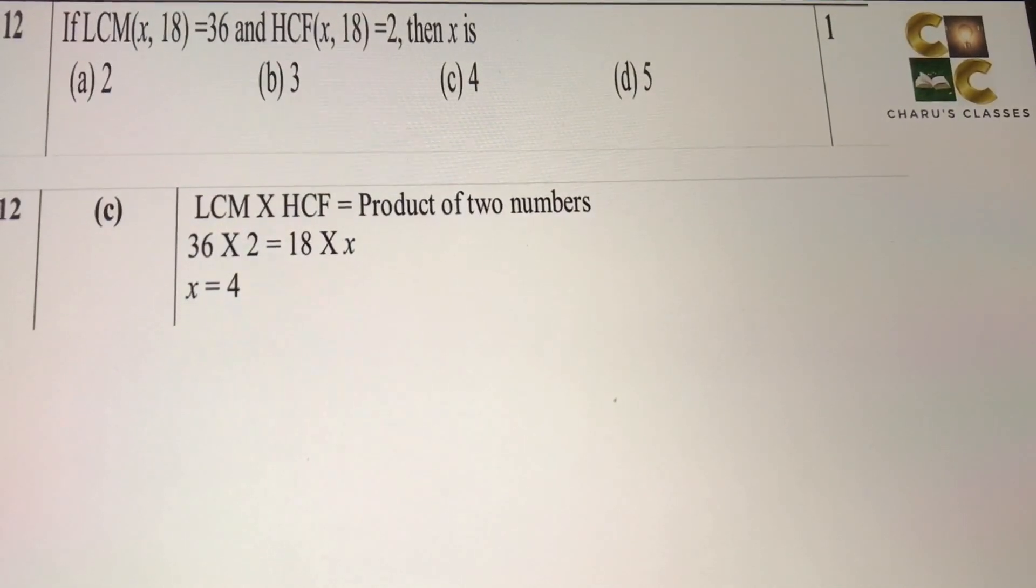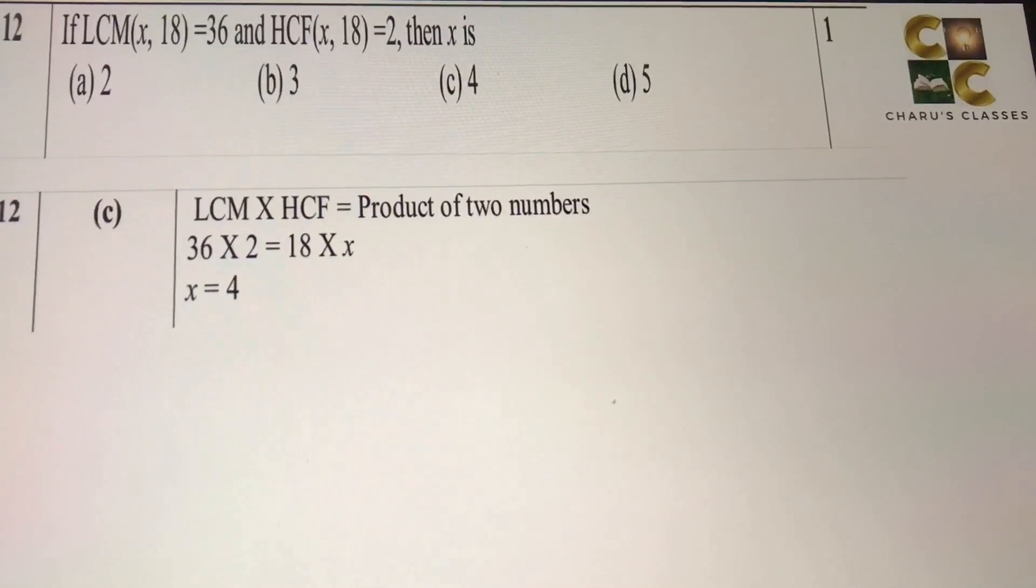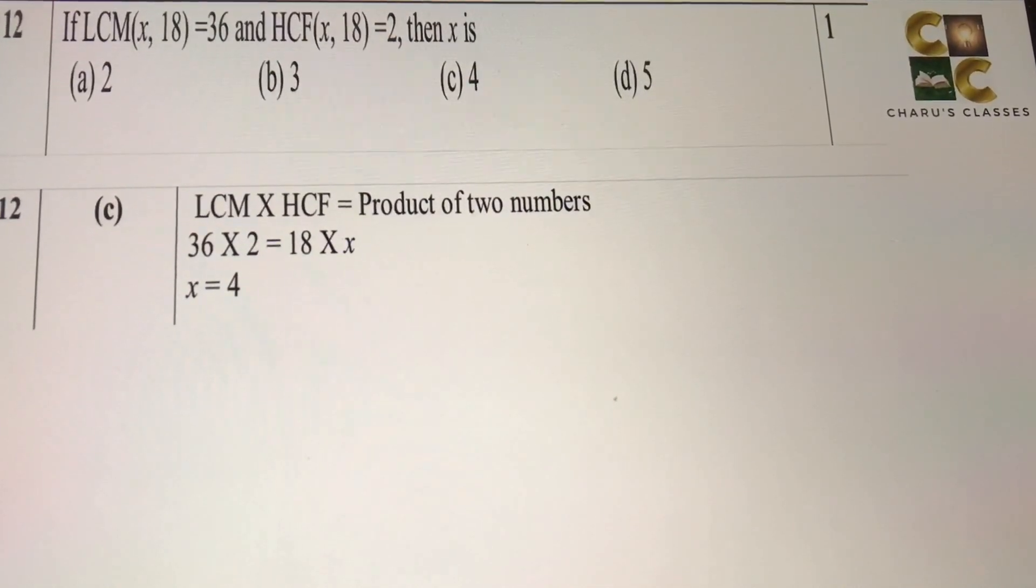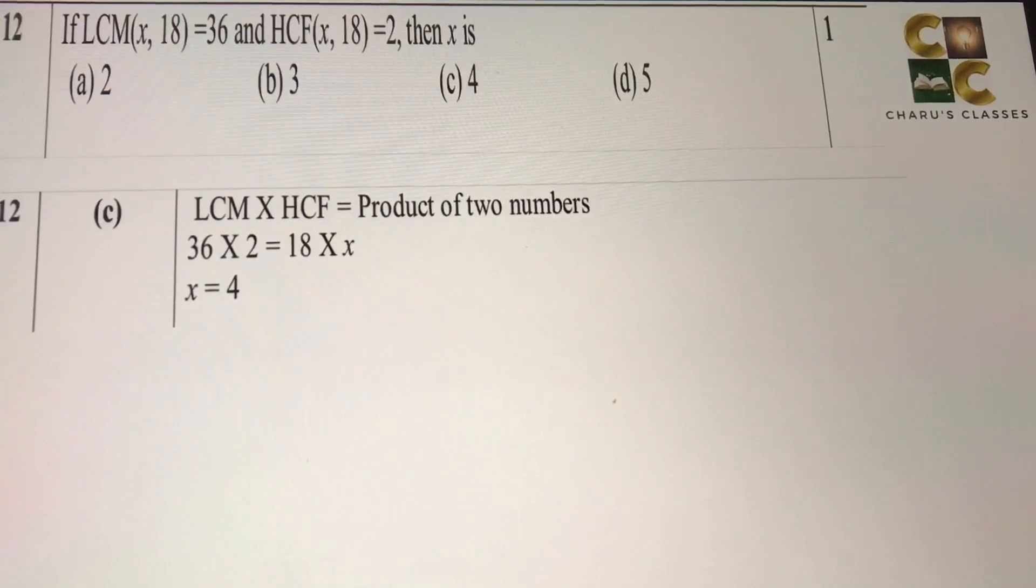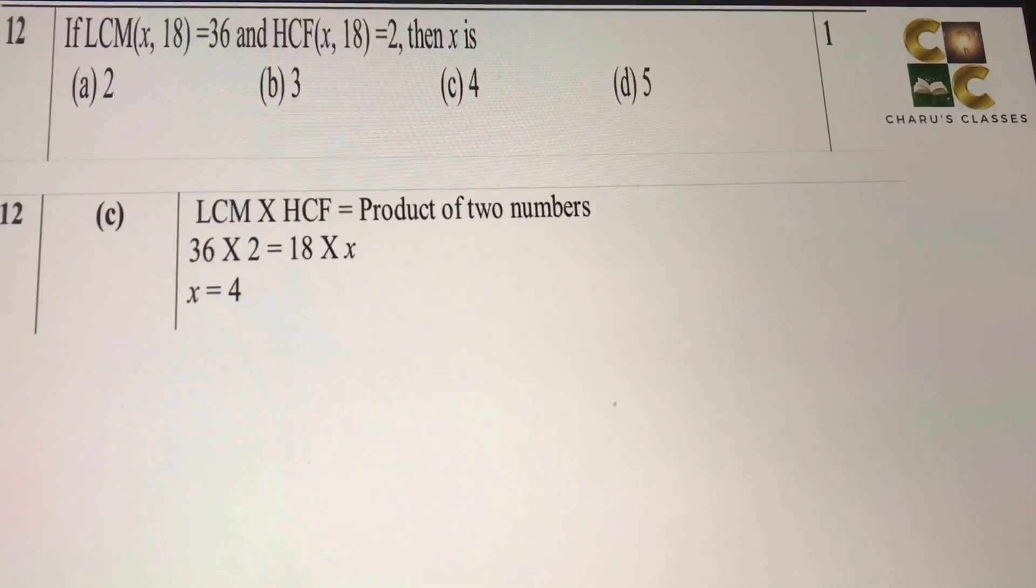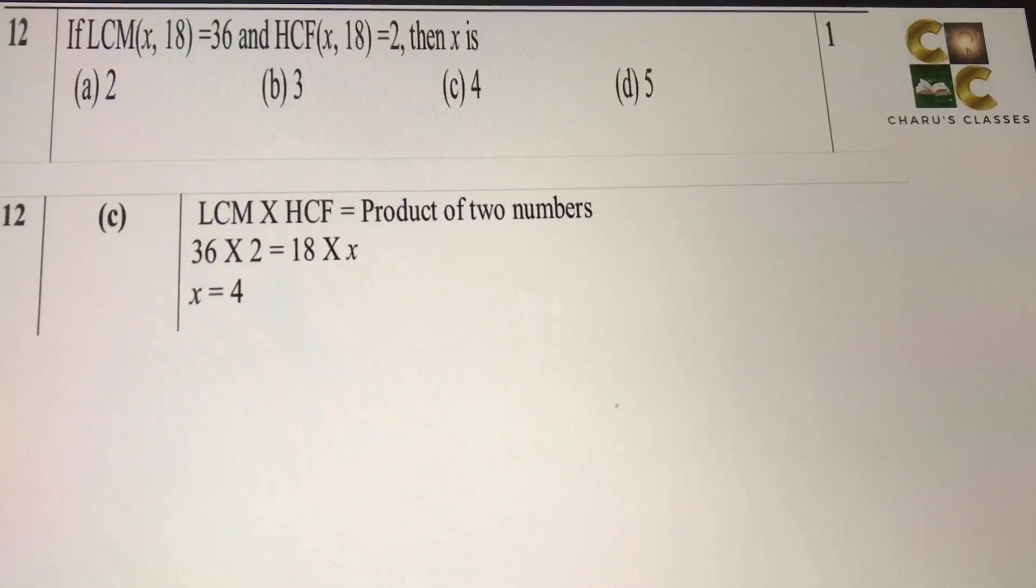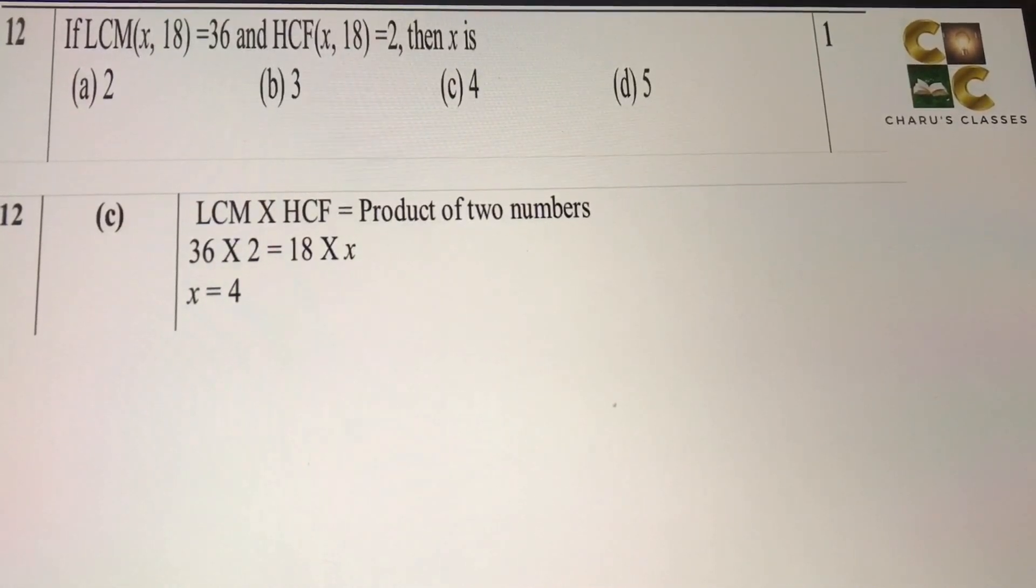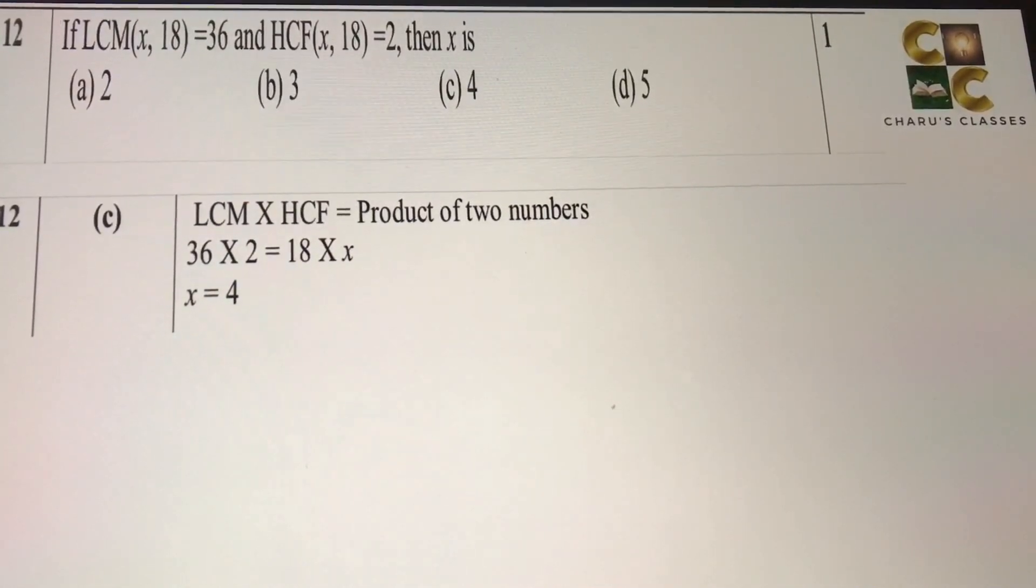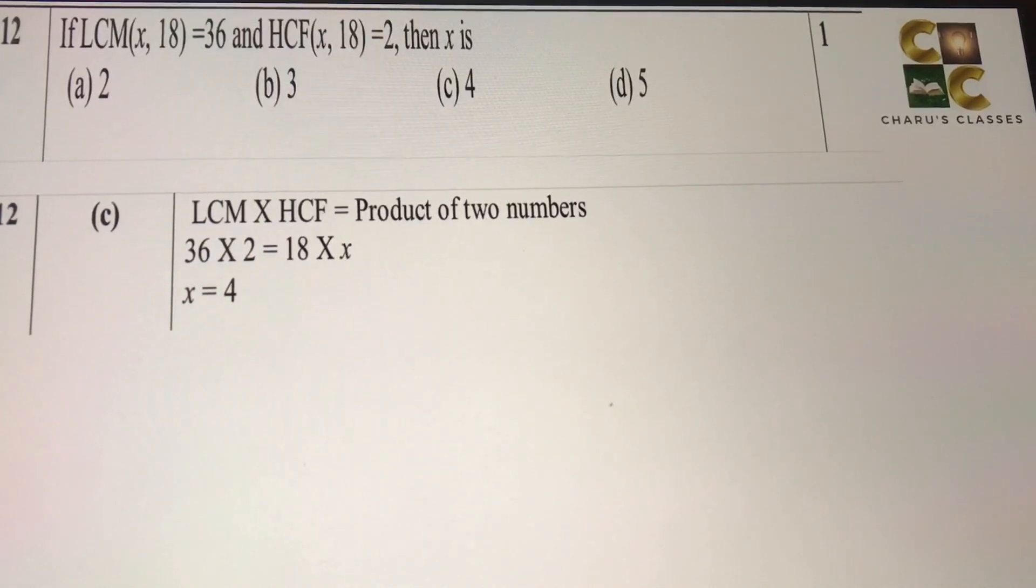If LCM of x and 18 is 36, and HCF of x and 18 is 2, then x is. So we know that LCM into HCF of any two numbers is equal to the product of two numbers. So 36 into 2 is 18 into x, that will give us x equal to 4.